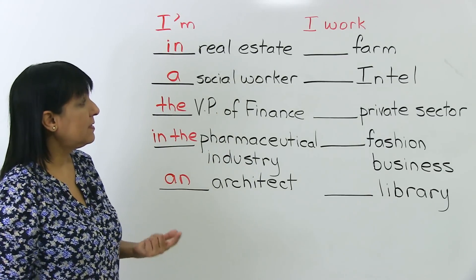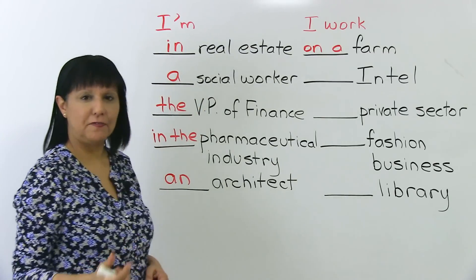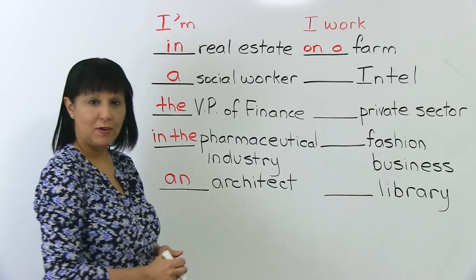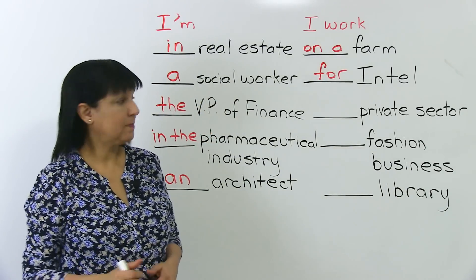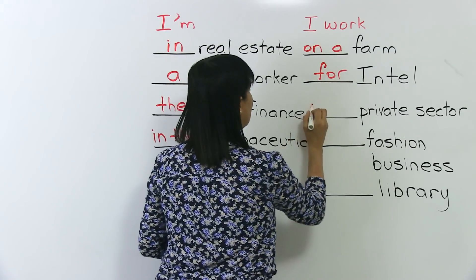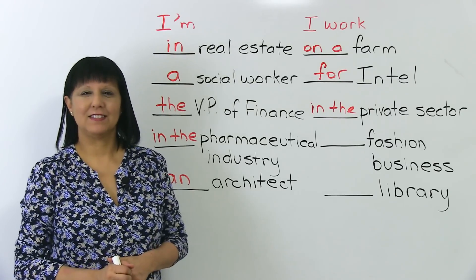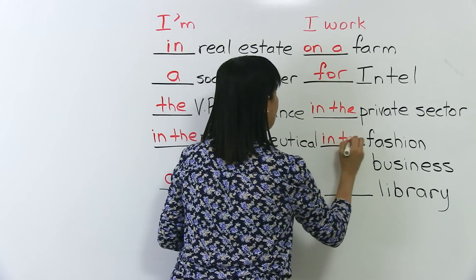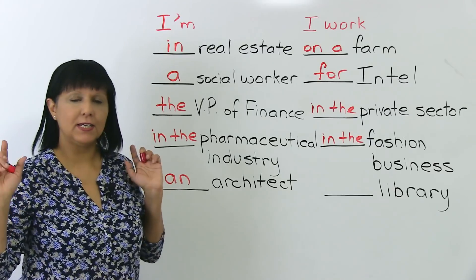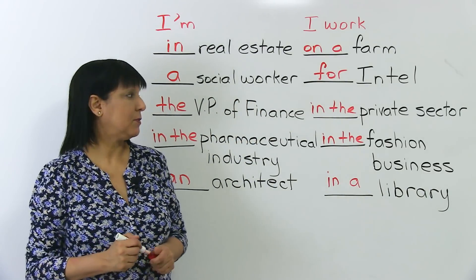Now on the 'I work' side. Farm is outdoors, so: I work on a farm. Intel is the name of a particular company, so: I work for Intel. Private sector — a little more specific — I work in the private sector. Fashion business: I work in the fashion business. And library — we just have the general location, no specific name — so: I work in a library. If you had the name of the library, it would be different.